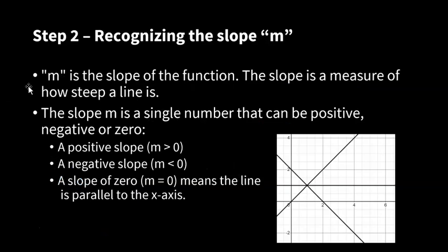Now, what does it mean to recognize the slope m? m is the slope of the function, which means to measure how steep the line is. The slope can be either positive, negative, or zero.